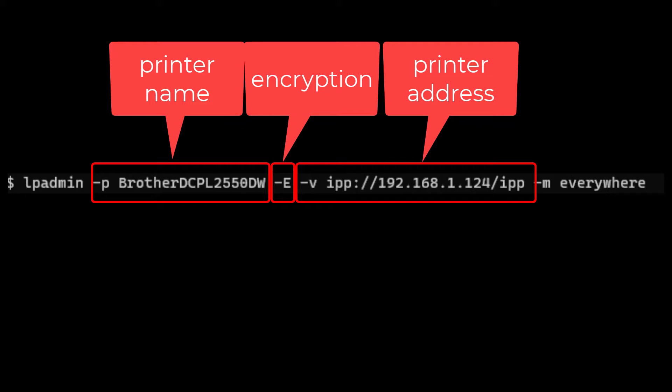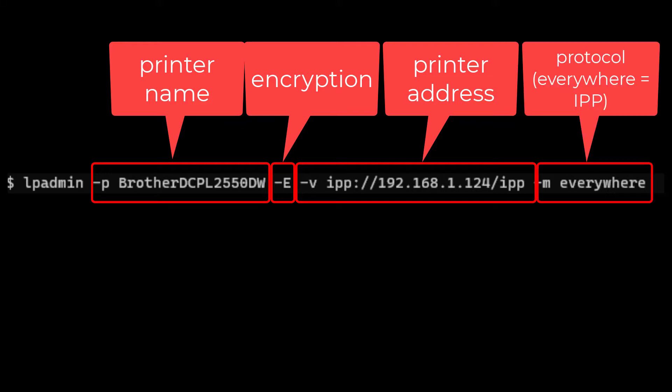The -m option tells it what kind of protocol to use when connecting to the printer and sending the data. The value 'everywhere' specifies the IPP protocol, which at this point is the only valid option you can use nowadays with CUPS.